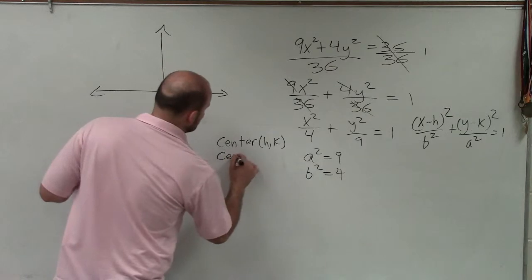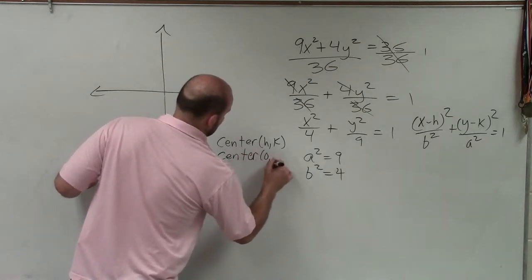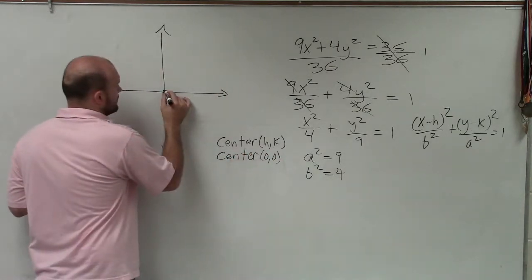So our center is h comma k. But you can see, I'm not subtracting anything from the x and the y. So therefore, our center in this problem is going to be 0, 0.